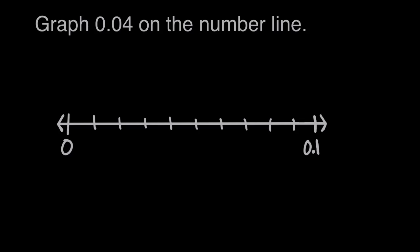Graph 0.04 on the number line. So here we have this number line that goes from zero to 0.1, or 1 tenth. And between zero and 1 tenth,